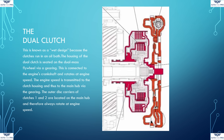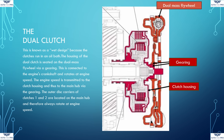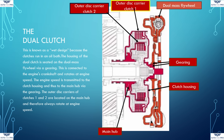This transmission features a wet clutch — the clutch plates run in an oil bath. The dual-clutch housing is connected via gear teeth to the dual-mass flywheel, which is connected to the engine crankshaft and always rotates at engine speed. The engine speed is transmitted to the clutch housing and thus to the main hub via the gearing. The outer disc carriers of clutch 1 and clutch 2 are located on the main hub, which means they also always rotate at engine speed.